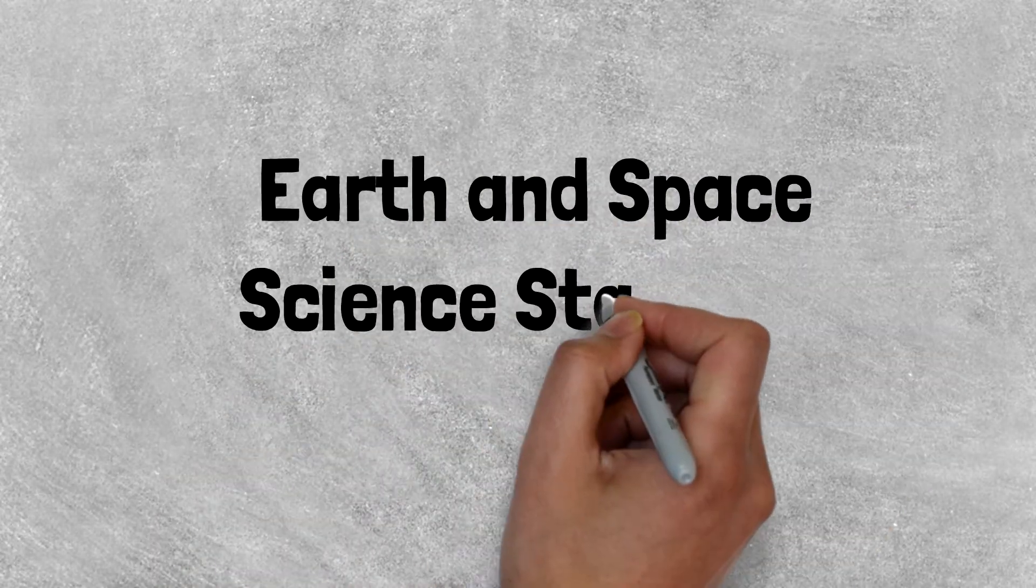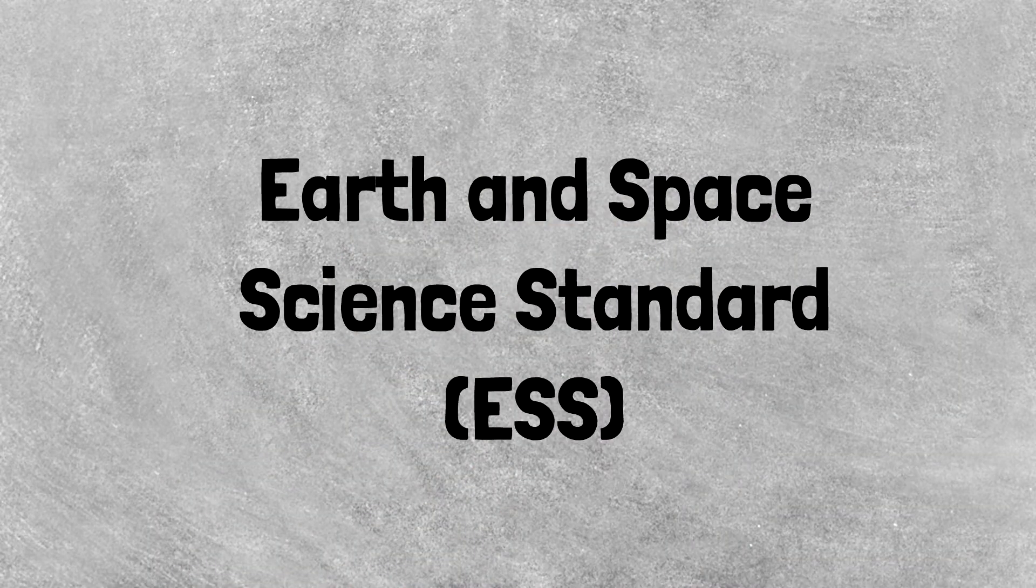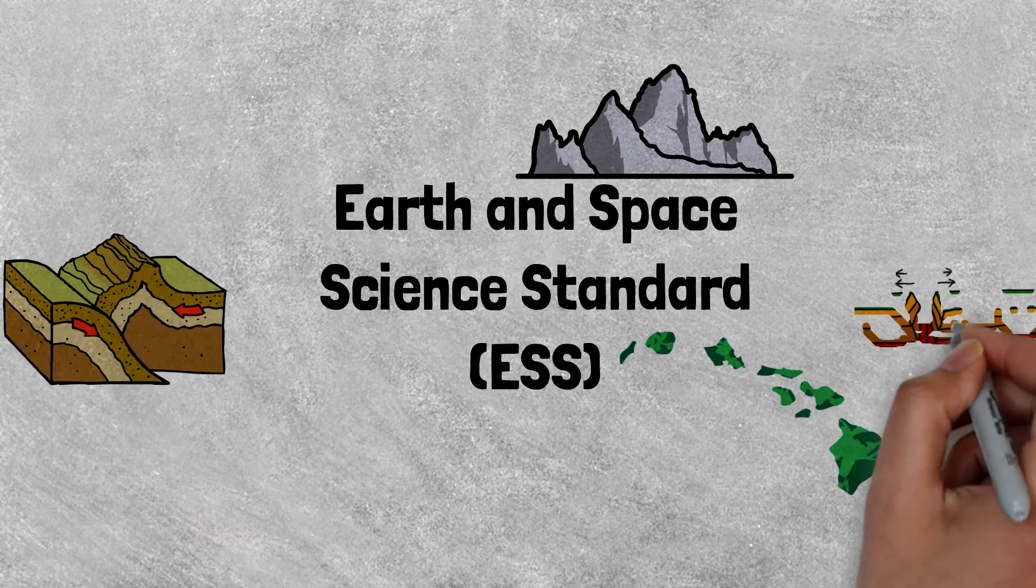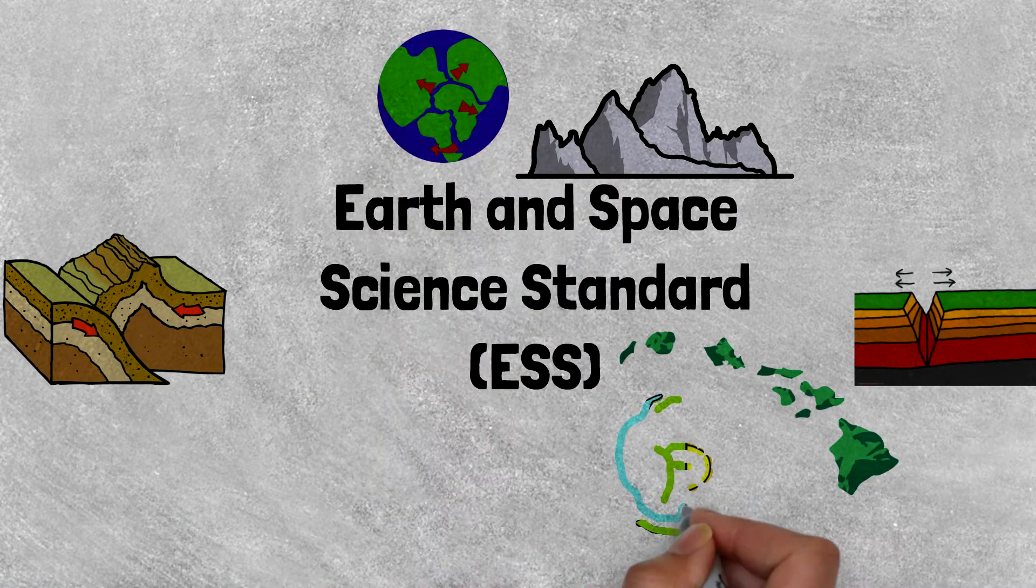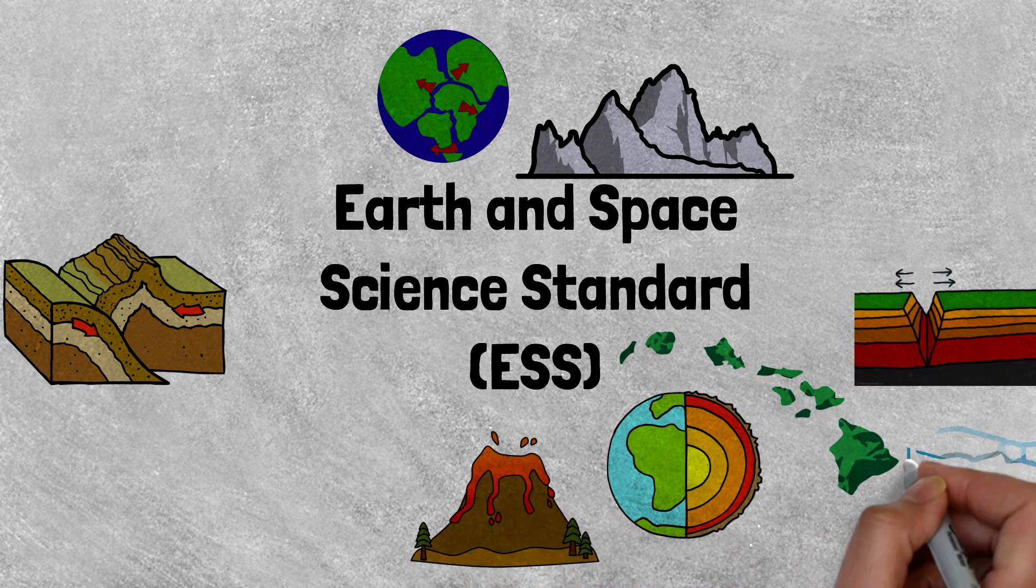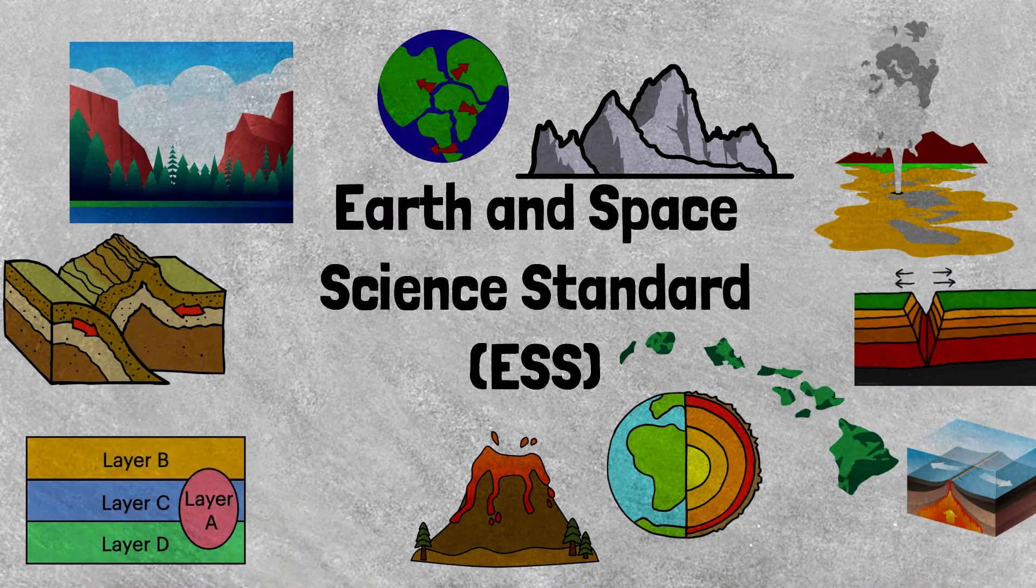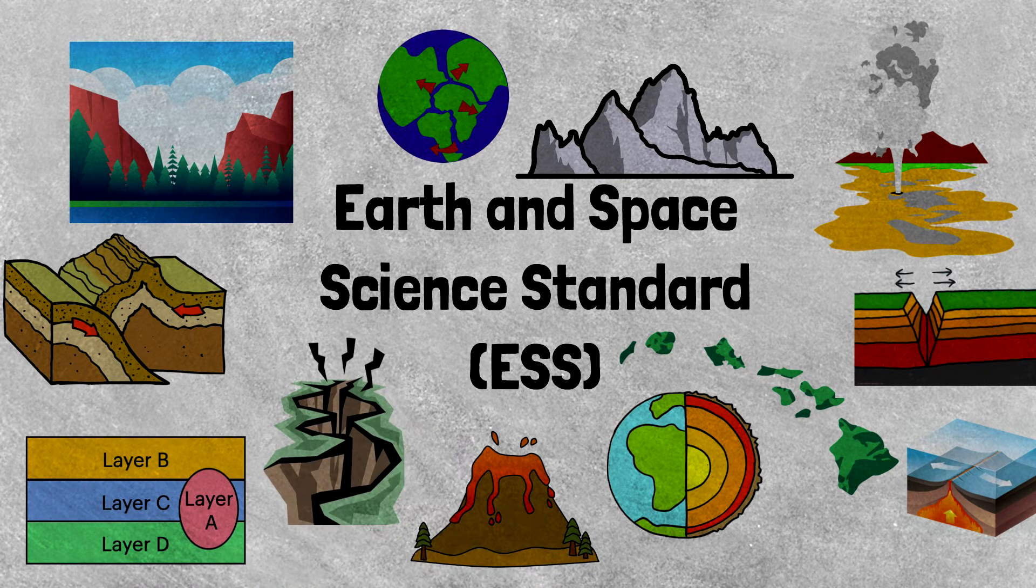This unit is part of the Earth and Space Science Standard. This standard focuses on the physical features of the Earth and how they formed. This includes the interior of the Earth, the rock record, plate tectonics, and landforms. Although there may be even more information that is not in this video, we will only cover what is necessary for our standards.